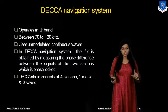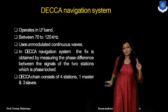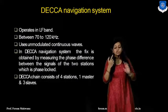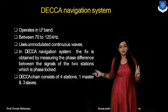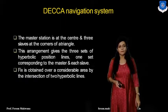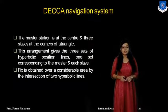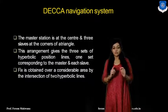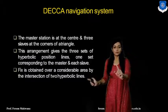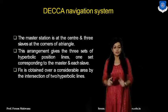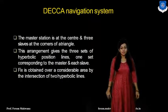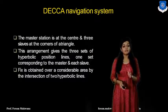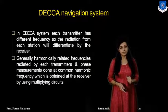The Decca chain consists of four stations: one master and three slaves. In contrast, the Loran chain consists of three stations: one master and two slaves. This arrangement gives three sets of hyperbolic position lines, one set corresponding to the master and each slave. The fix is obtained over a considerable area by the intersection of two hyperbolic lines.